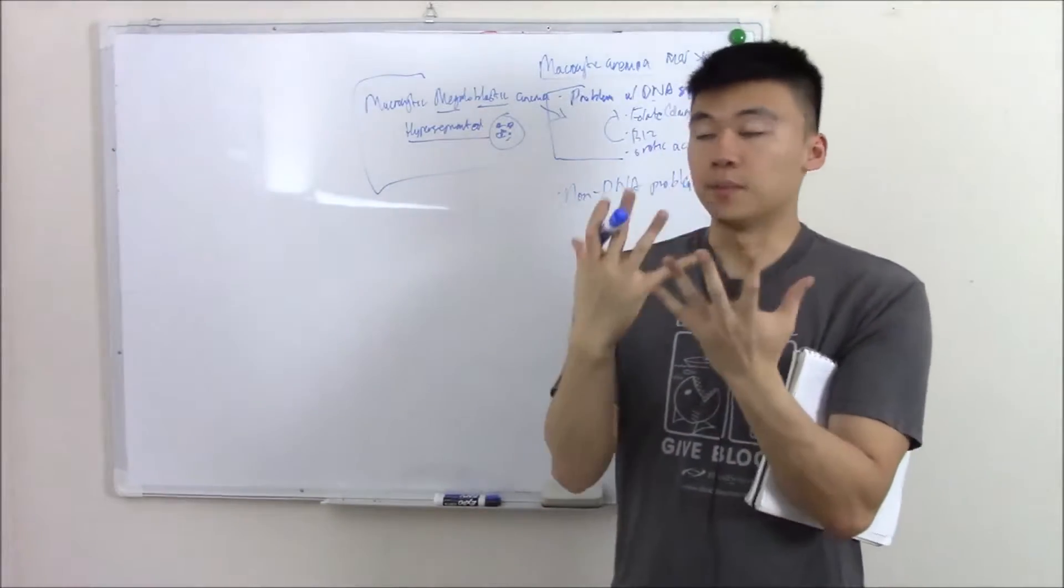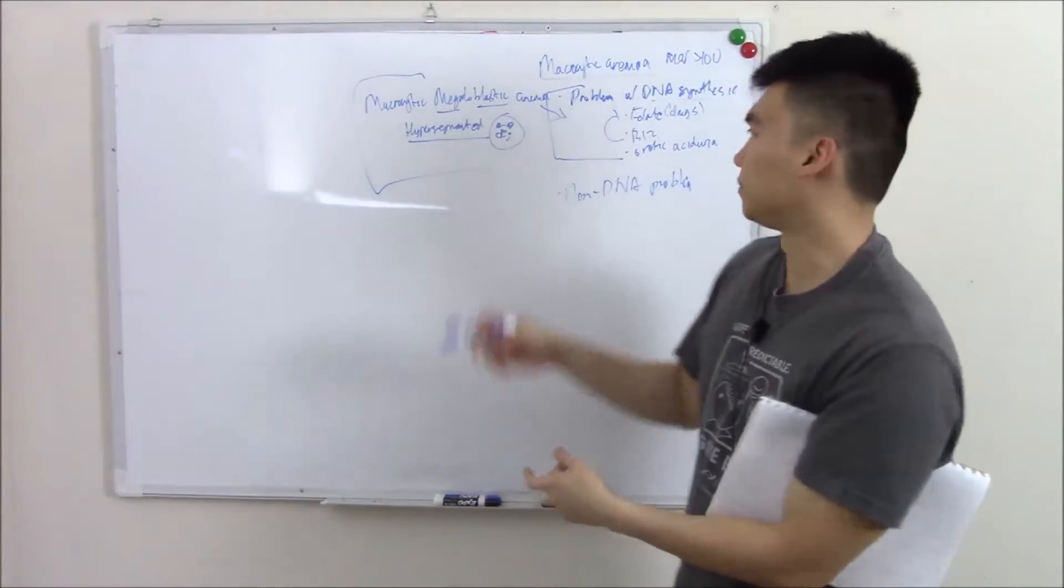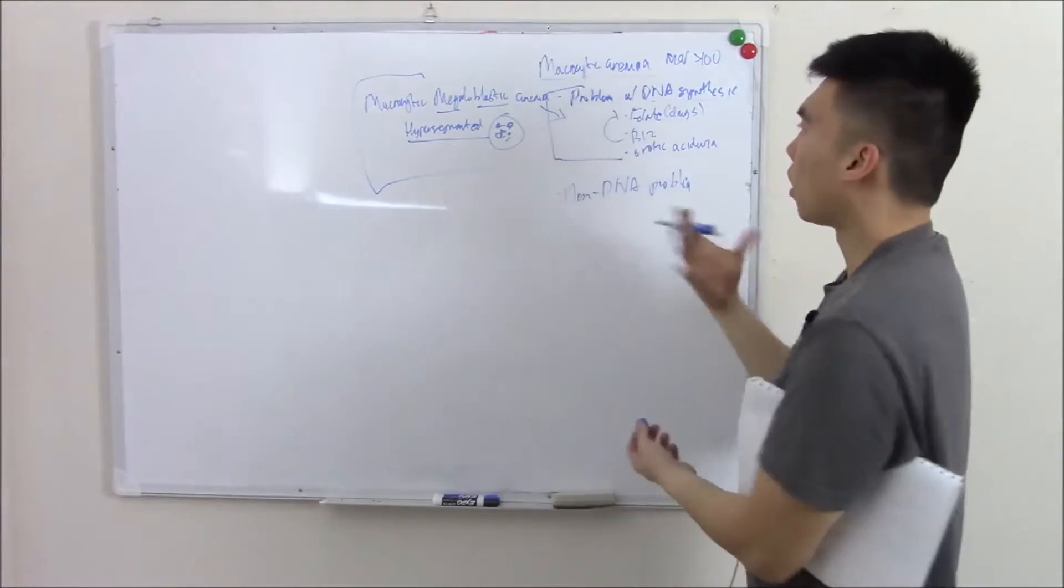Anytime you have a very classic image, they can just show you a hypersegmented neutrophil and you have to fill in the blank, and you're thinking of these three things. So that's problems with DNA synthesis.